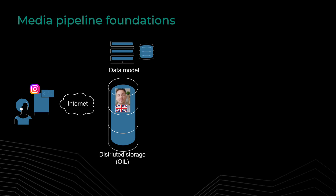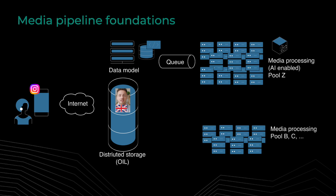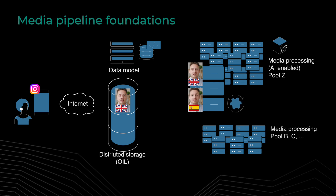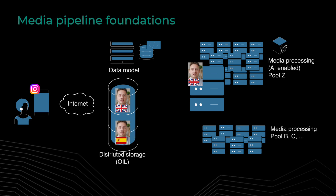Then we send an order to the data model that we want that media translated to, for instance, Spanish. That order is put into a queue. A few milliseconds after, some worker, in this case AI-enabled, picks up that command, downloads the media from OIL, reads that media, translates that media, creates the Spanish audio and lip-sync content, and puts that content into the distributed storage, into OIL.